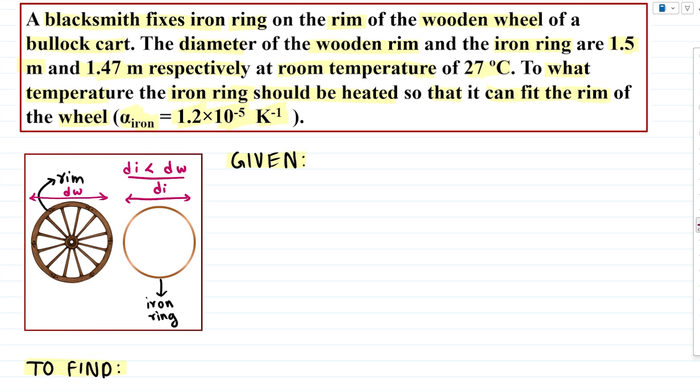And then what do we do? We heat this ring. And when we heat, we know that this iron ring would expand. And we would keep on heating until this ring diameter is equivalent to the diameter of our wheel. And then we place that ring on the wheel and then we allow it to cool.